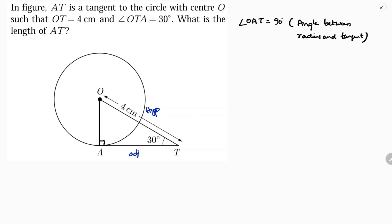So now I will use the ratio cos theta. Cos theta is adjacent by hypotenuse. So here cos 30 degrees, adjacent is AT, hypotenuse is 4.